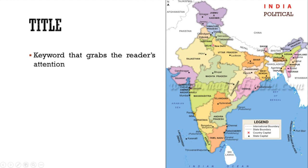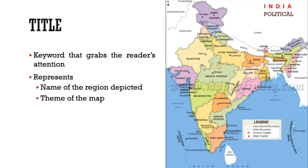The title is the key word that grabs the reader's attention. The need for a suitable title — whether small or long — depends on the reader, but the title should provide an answer to their 'what,' 'where,' and 'when.' The title represents the name of the region depicted, which answers 'where,' and also represents the theme of the map, which answers 'what' and 'when.'